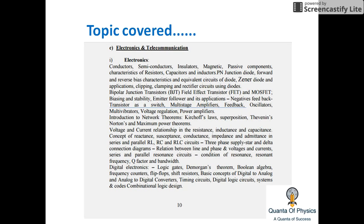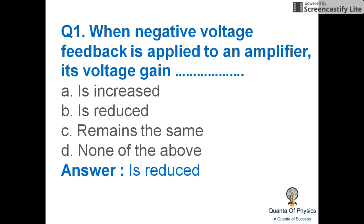This set of 30 questions covers transistors as a switch, multi-stage amplifiers, and feedback circuits — both negative and positive feedbacks. Question number one: when negative voltage feedback is applied to an amplifier, its voltage gain is reduced.